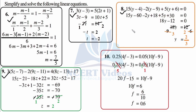The idea from these questions is that when you reach higher standards, you don't have to write everything — you can perform certain things in your mind as long as the calculation is manageable. If it isn't, write it down. With this we have reached the last question of exercise 2.5, question number 10: 0.25 is getting multiplied with (4f minus 3) equals 0.05 is getting multiplied with (10f minus 9).